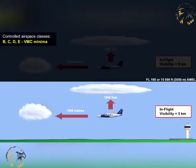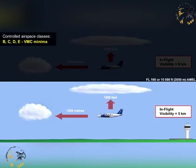Below 10,000 feet, or below flight level 100 if the transition altitude is lower than 10,000 feet, VMC minima in controlled airspace require the pilot to have an in-flight visibility of at least 5 km, and to be able to maintain vertical separation from cloud of at least 1,000 feet, and horizontal separation from cloud of at least 1,500 meters.